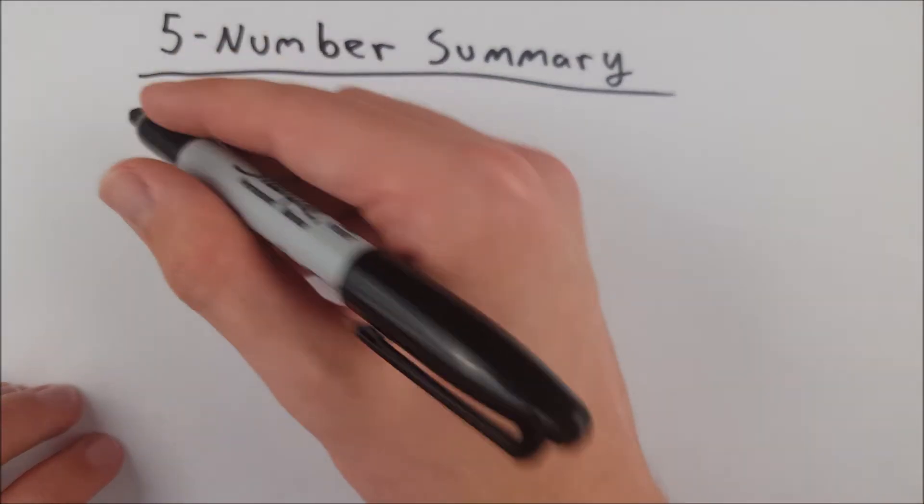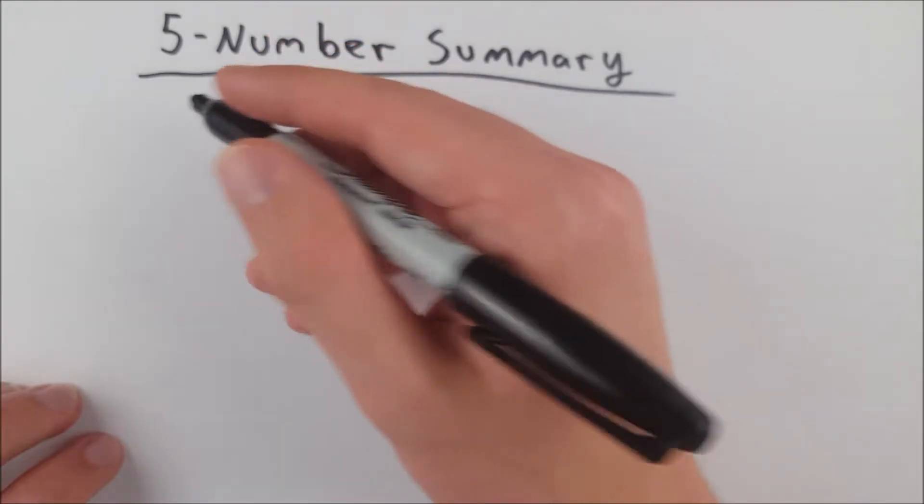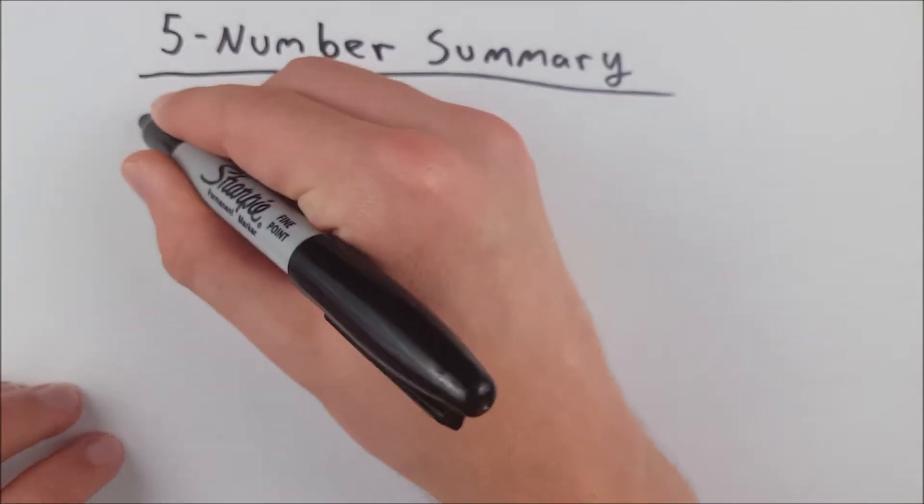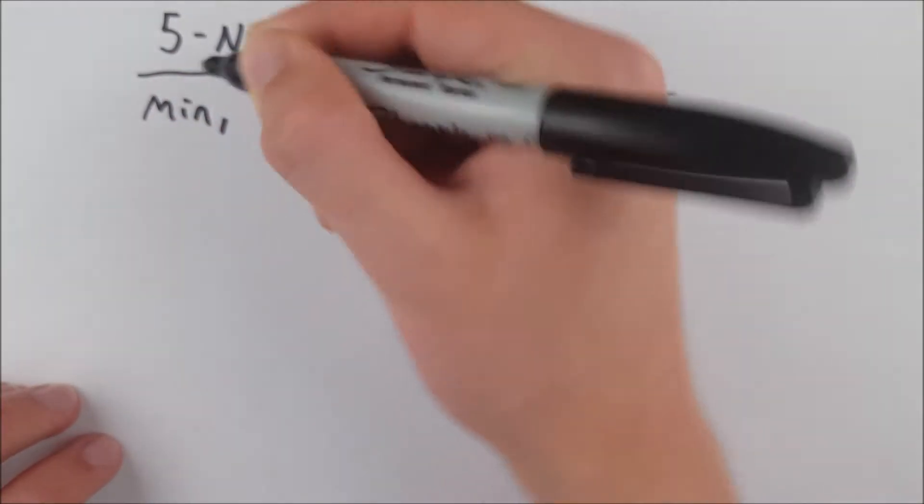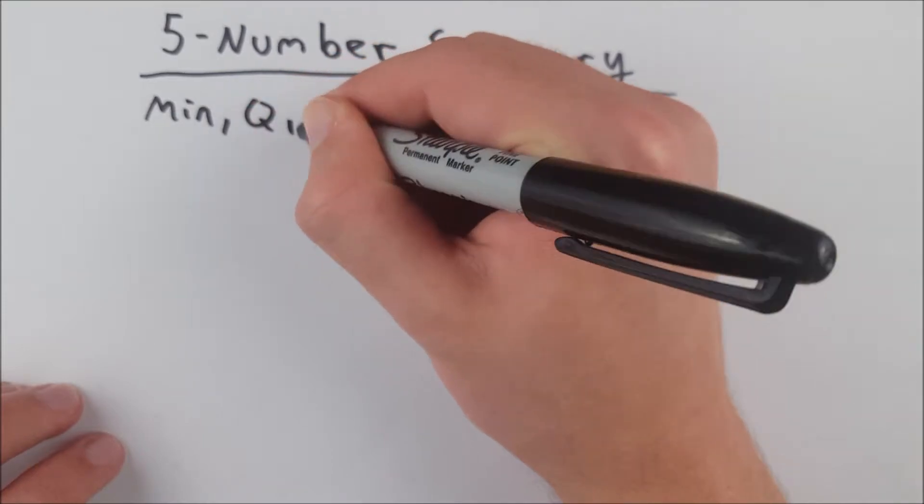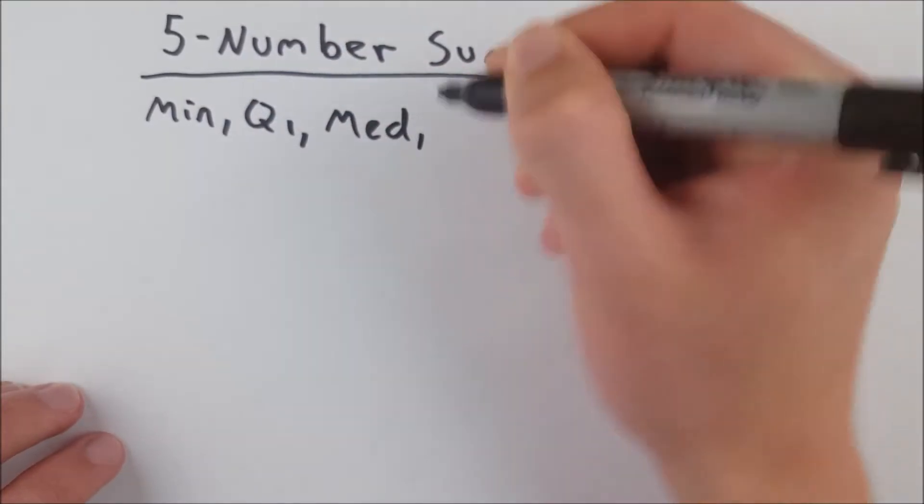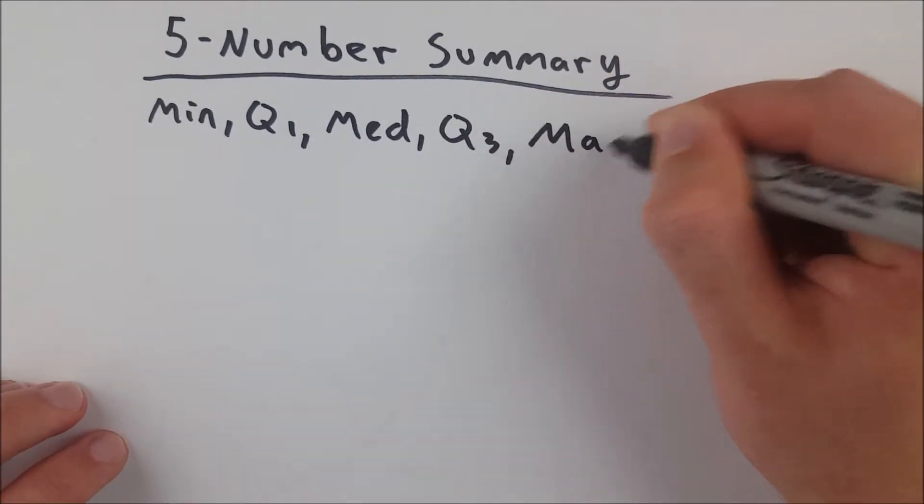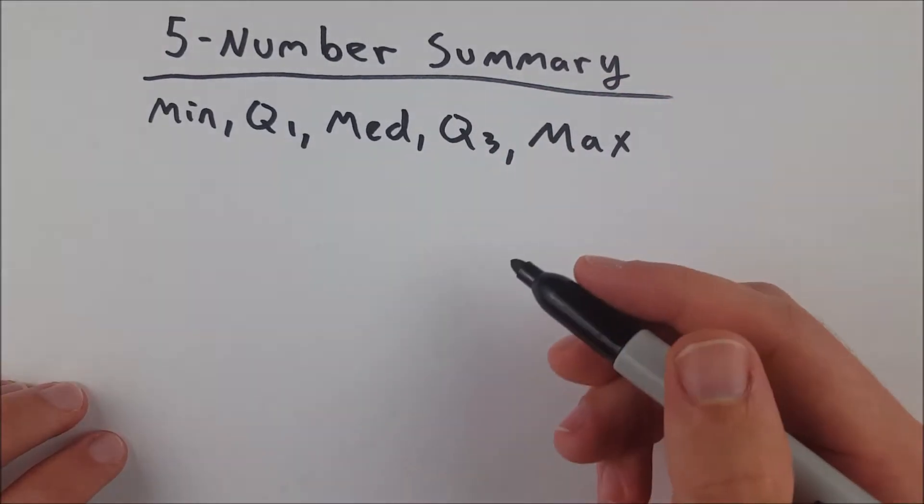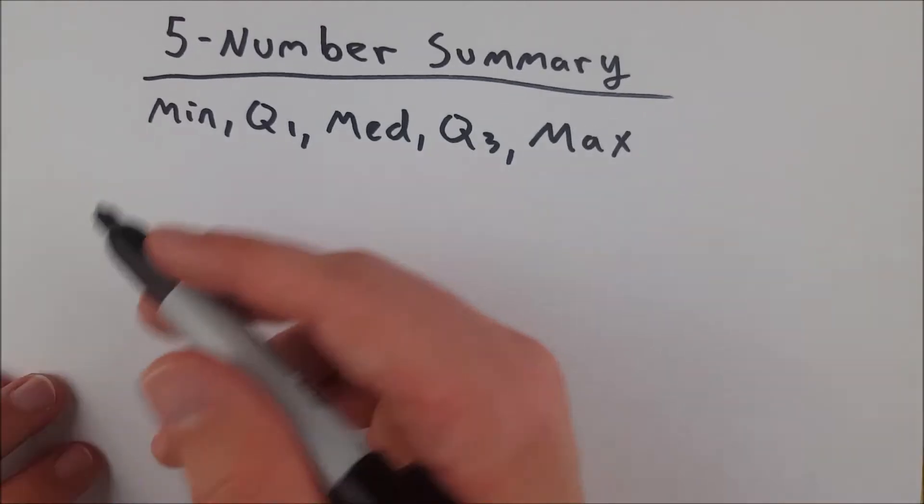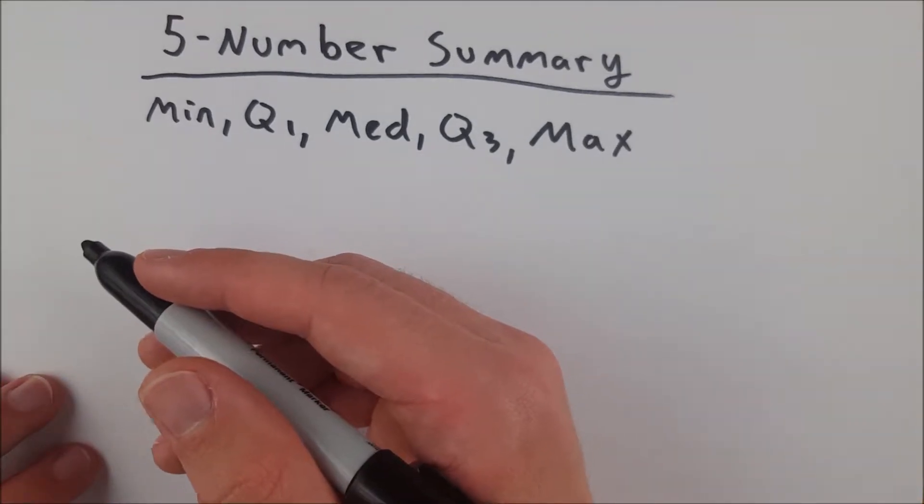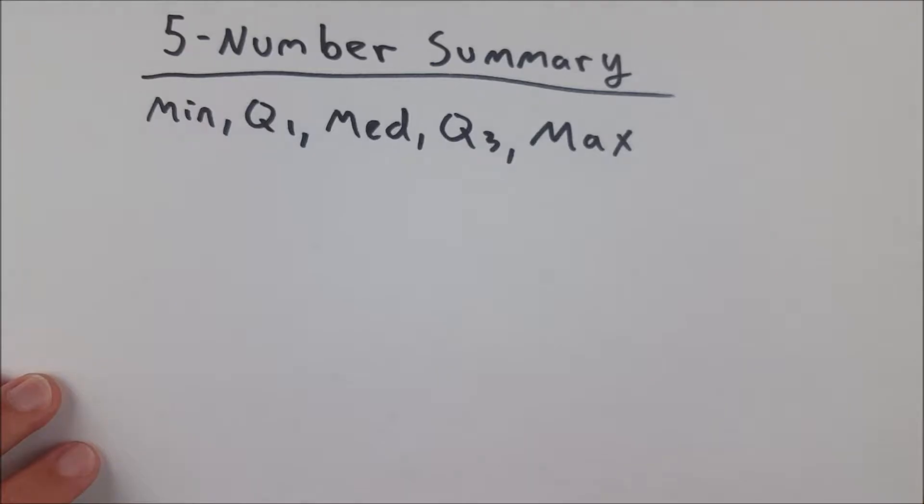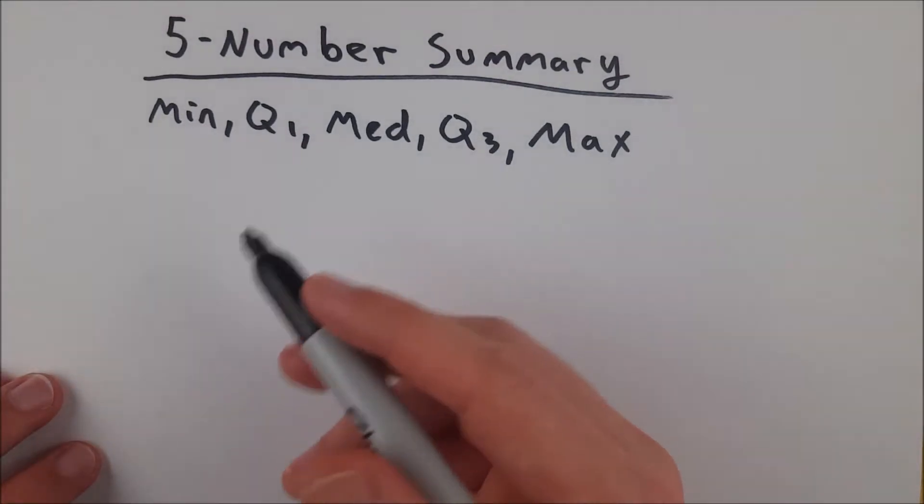The five-number summary of any set of data is comprised of five different numbers, naturally. The minimum, the first quartile Q1, the median, the third quartile Q3, and the max. And all of these values are very straightforward to find. So let's get right into it with a simple example, and that should do it for the five-number summary. There's not too much nuance or trickery going on here.